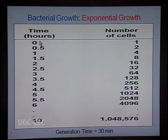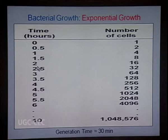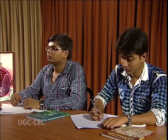As seen in this slide, after a time period of 1 hour, the number of cells increases to 4, which is 2 to the power of 2. After another 2 hours, the bacterial number increases to 16, that is 2 to the power of 4. From 0 to 2 hours, 4 generations have passed, and hence the bacterial number has increased to 16. In this way, bacterial growth always follows an exponential growth curve.